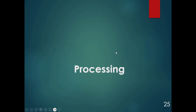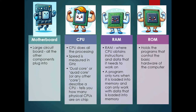When it comes to processing, there are four key components: the motherboard, the CPU, the RAM, and the ROM. The motherboard is the largest circuit board within the system unit — all other components plug into it. The CPU (central processing unit) does all the processing. Its speed is measured in gigahertz, and when you read about dual-core or quad-core, it describes how many CPUs are on that one chip.